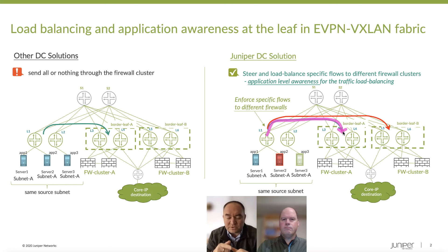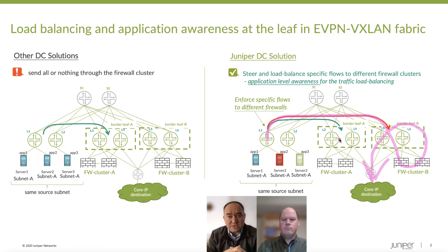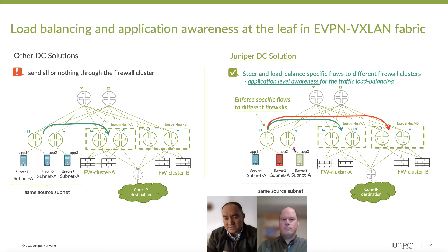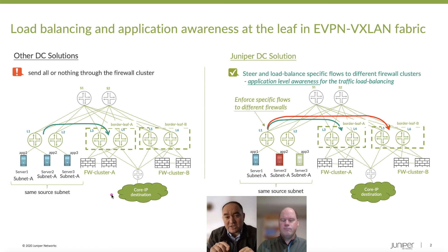So with filter-based forwarding, you can simply say that traffic originated at the app 1 level will go to firewall cluster A. Then for another app deployed in the same subnet, you can say, okay, for that application I will just send it to firewall cluster B, because it's not generating that much traffic — it can still go through my legacy firewall clusters. And then for application 3, which we trust and know is secure, but also generates a lot of traffic, we may decide to just send it directly to the core IP as a destination. So compared to the legacy approach, here we have application awareness at the top-of-rack switch level based on source-destination TCP ports and source-destination IPs.